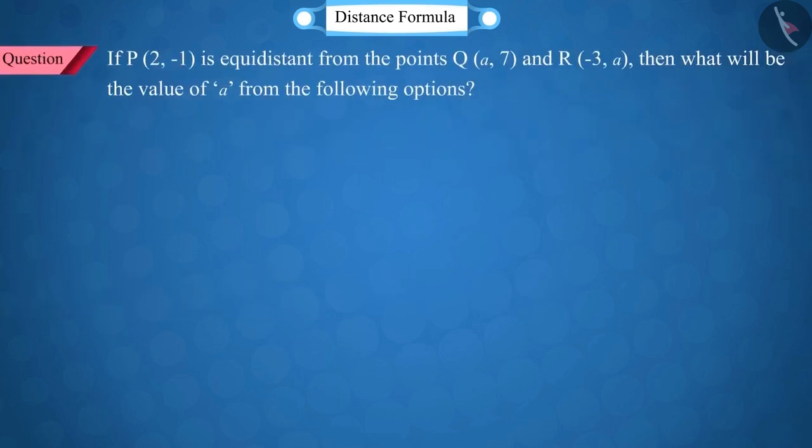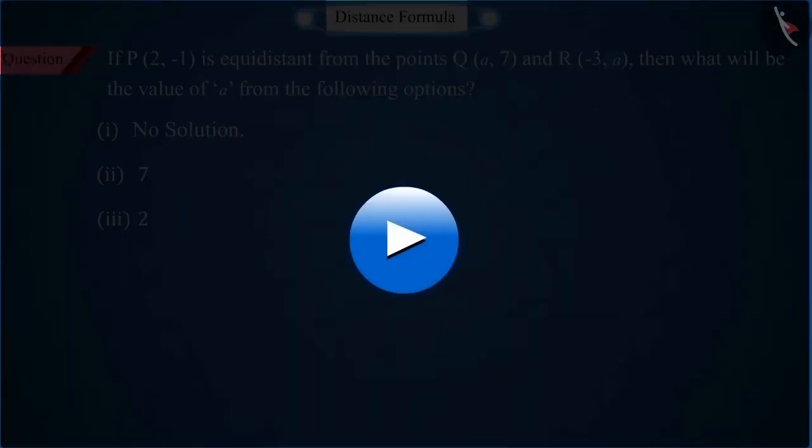If the point P is equidistant from the points Q and R, then what will be the value of A from the following options? To solve this question by the distance formula, pause the video and then match your answer.